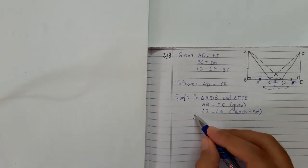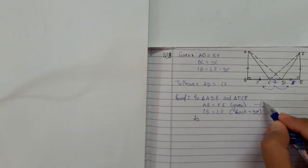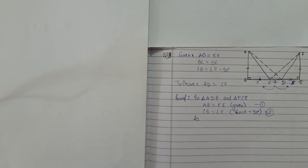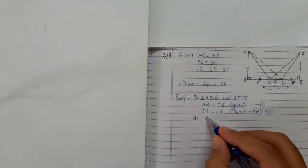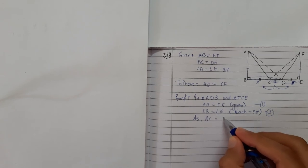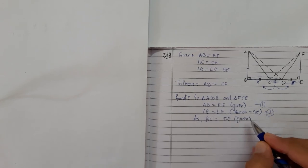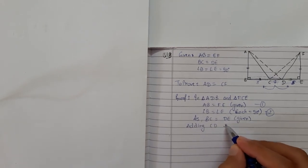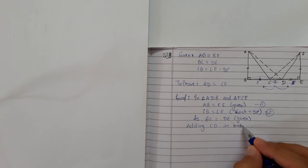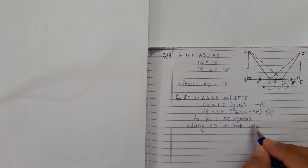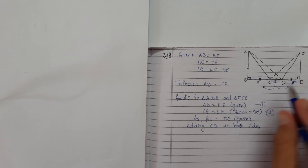This thing was first, second, and we're looking for the third thing. BC equals DE which was given. Adding CD on both sides, we don't have the value, so make sure you don't write values.